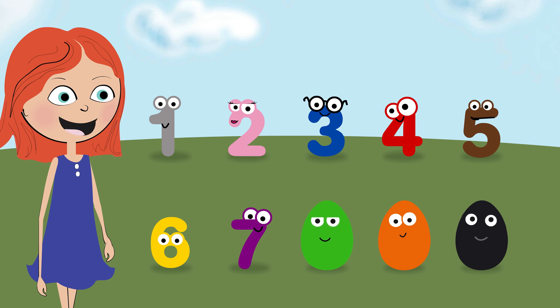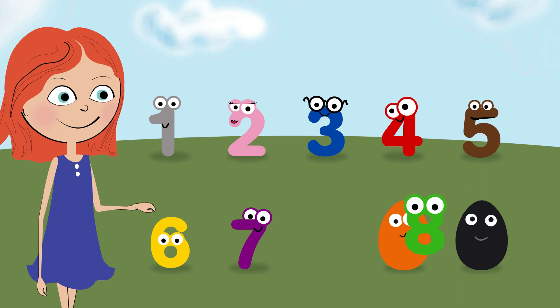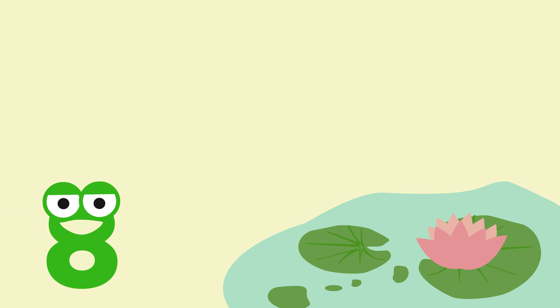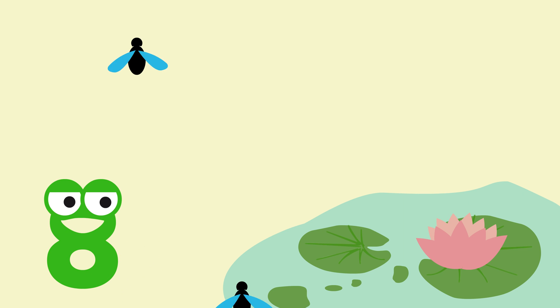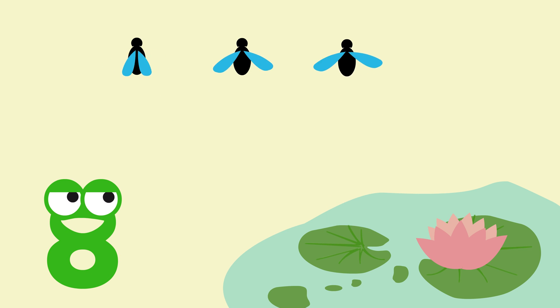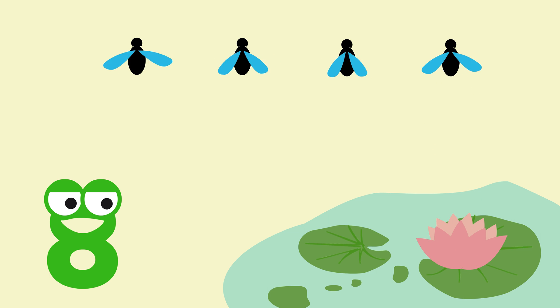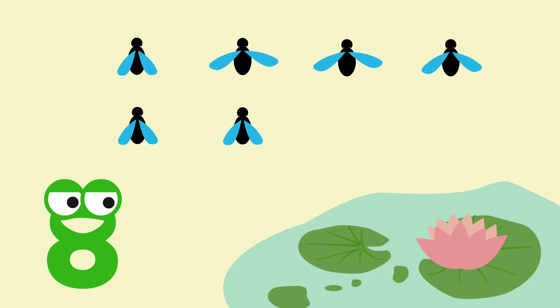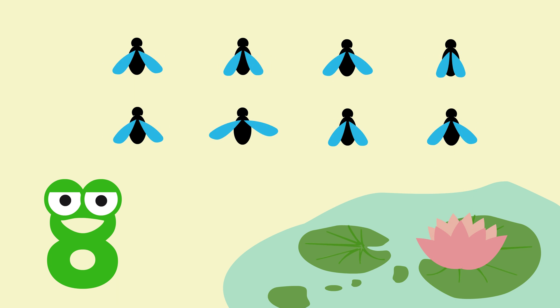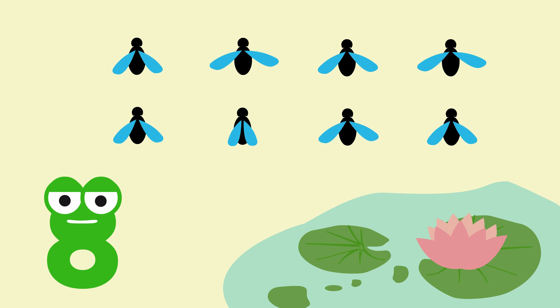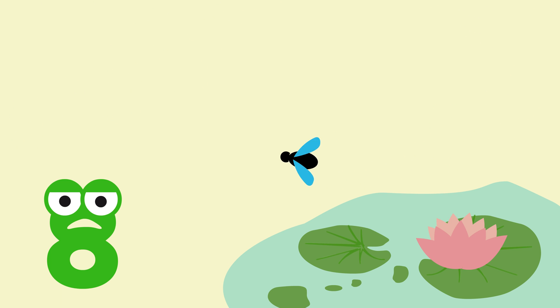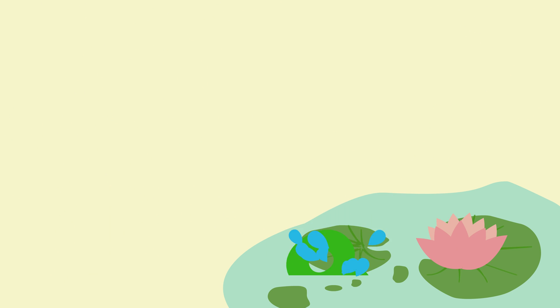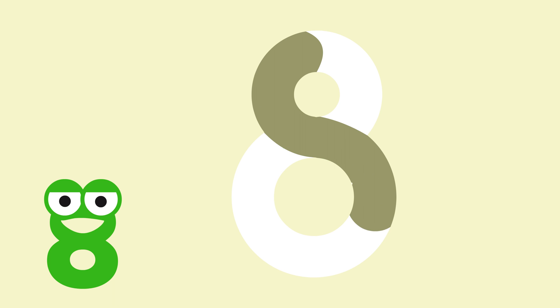What could be inside the green egg? Eight. Eight. Be careful, flies. Beware of frog. Eight little flies. Yummy. Yummy. Mmm. Eight. We write number eight like this. Eight.